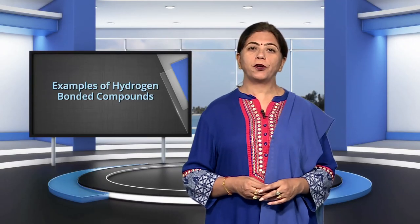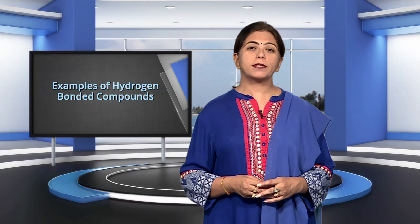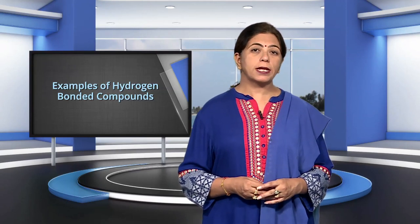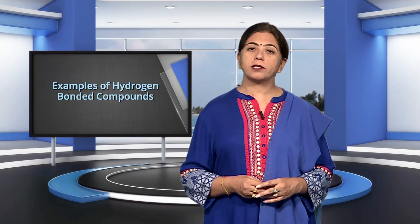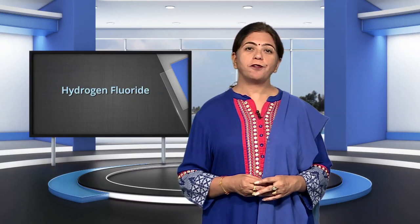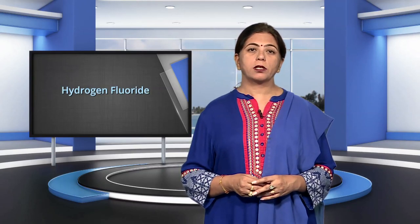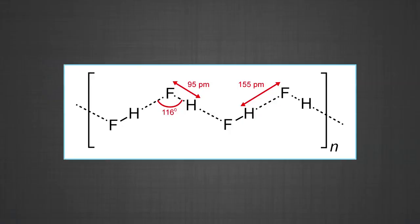Examples of hydrogen-bonded compounds: hydrogen fluoride in the solid state consists of long zigzag chains of molecules associated together through hydrogen bonds. Thus, hydrogen fluoride is represented as (HF)_n. In the liquid or gaseous state, however, the chain becomes shorter.